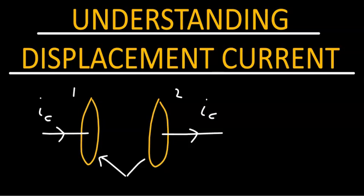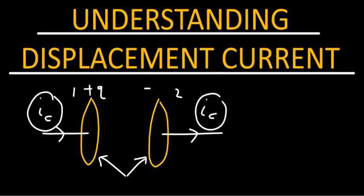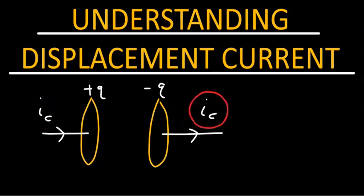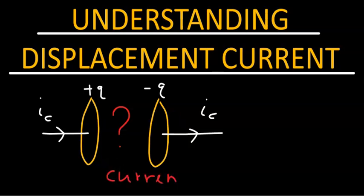While these two plates are being charged, there will be charge buildup on these two plates. So let's assume when the current in the conductor is Ic, the charge on the left-hand side plate is positive Q and the negative plate is minus Q. While this charging process is going on, an interesting question arises: there is current of amount Ic amperes going into the left plate and the same current Ic coming out of the right plate. So the question is, what happens in the region in between? Is the circuit completed in the region between the plates? Is there any kind of current there?